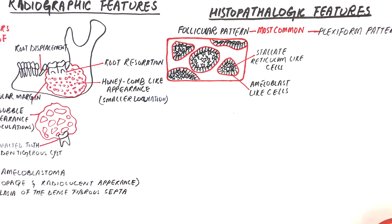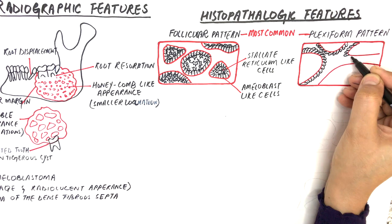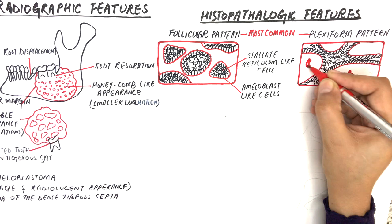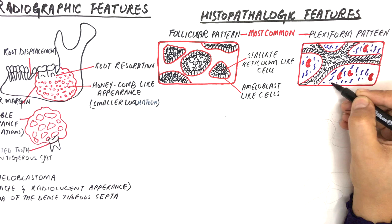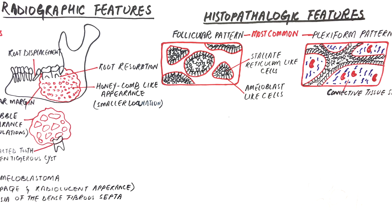In the plexiform pattern, ameloblastoma consists of long anastomosing cords of odontogenic epithelium. Tall columnar or cuboidal cells make up the outline of these epithelial cords, and the central part consists of loosely arranged epithelial cells. The connective tissue stroma is loosely arranged and vascular. Cyst formation is relatively uncommon, and when it does occur in the plexiform pattern, it is more often associated with stromal degeneration rather than cystic change within the epithelium.